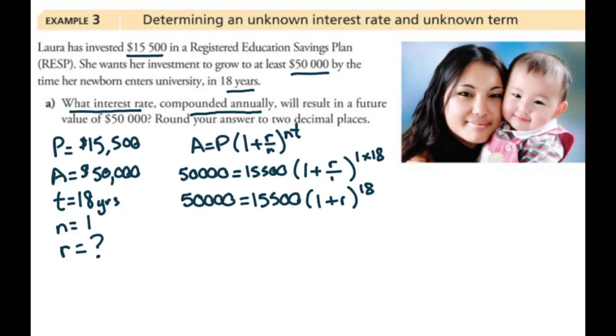Now in a situation like this, the next step we need to do is divide by the principal, divided by the 15,500. And again, we do need to take every decimal place.